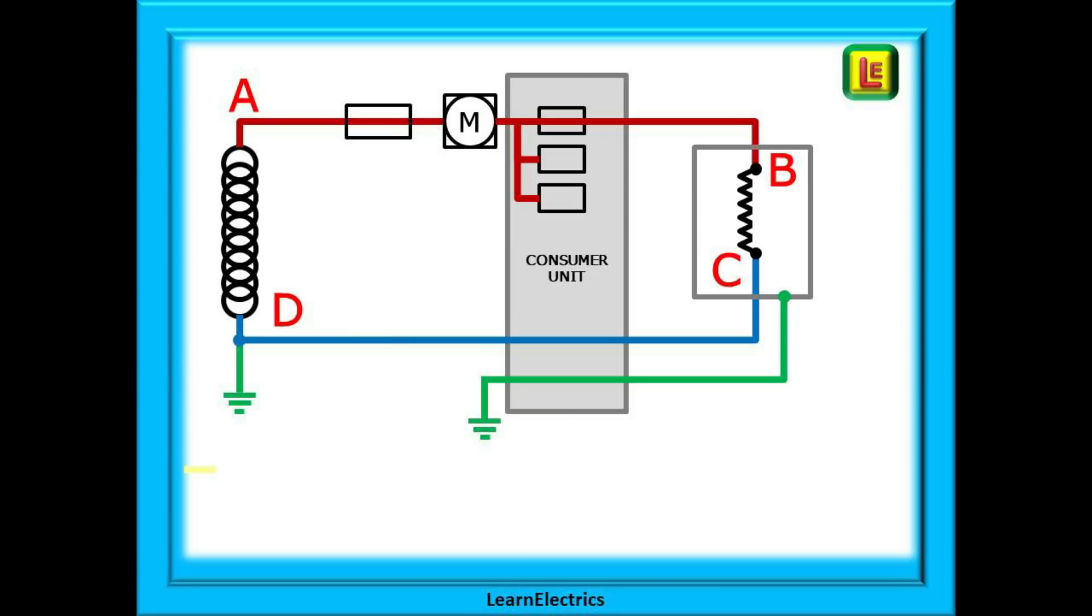In normal fault free conditions, current will flow from the top of the supply transformer at point A through the main fuse, through the meter and breakers into the consumer unit and all the way to the connected appliance at point B. Point B will be at almost 230 volts. Current passes through the appliance to point C where it will be at almost zero volts electrical potential. Most of the voltage has been absorbed by the appliance and this is the correct thing for it to do. The current then returns along the neutral conductor from point C to point D.